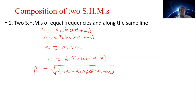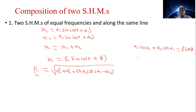The resultant amplitude R depends on the value of phase difference, that is alpha 1 minus alpha 2. Now we can determine the value of phi. We have the equations: A1 cos(alpha 1) plus A2 cos(alpha 2) is equal to R cos(phi) — equation number 4 — and A1 sin(alpha 1) plus A2 sin(alpha 2) is equal to R sin(phi) — equation number 5.